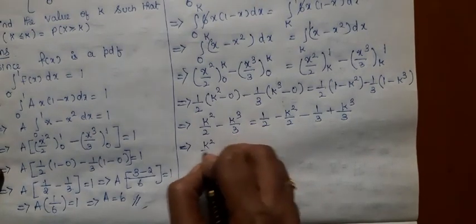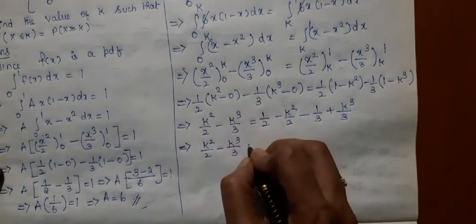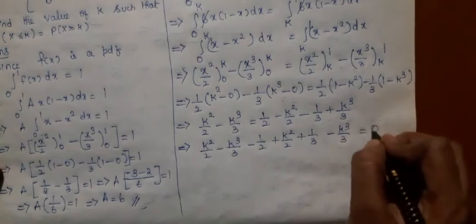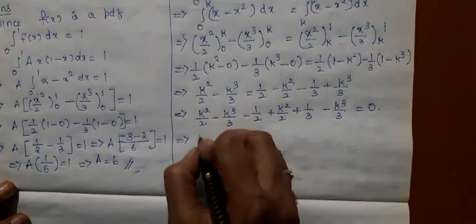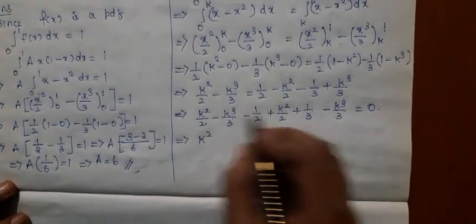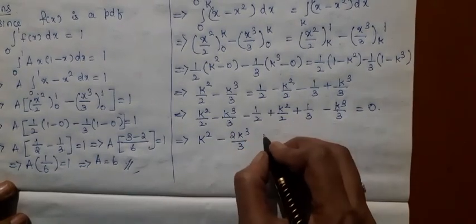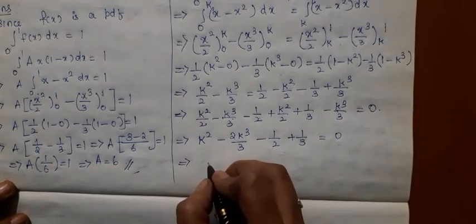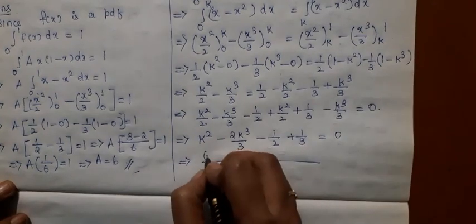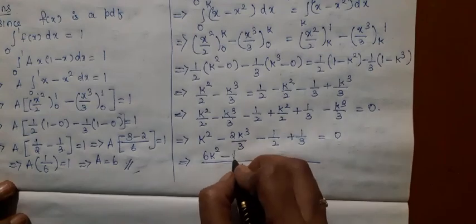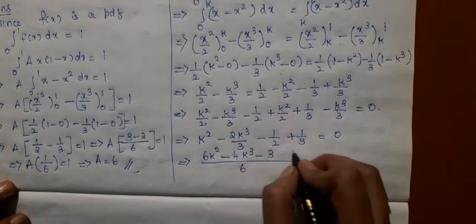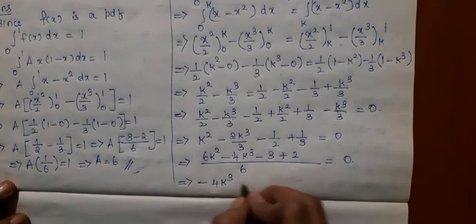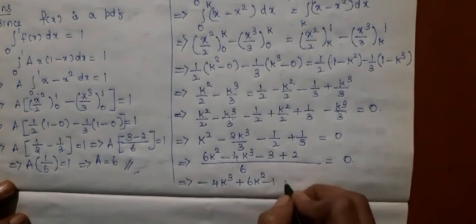Simplifying: K squared by 2 minus K cubed by 3 equals 1/2 minus K squared by 2 minus 1/3 plus K cubed by 3. Rearranging, we get K squared plus 2K cubed by 3 minus 1/2 plus 1/3 equals 0. Taking 6 as the LCM, this becomes 6K squared minus 4K cubed minus 3 plus 2 equals 0, which gives minus 4K cubed plus 6K squared minus 1 equals 0.